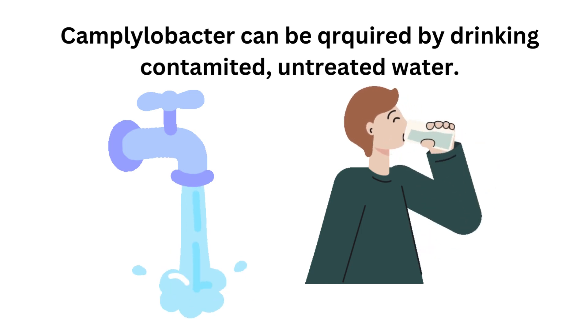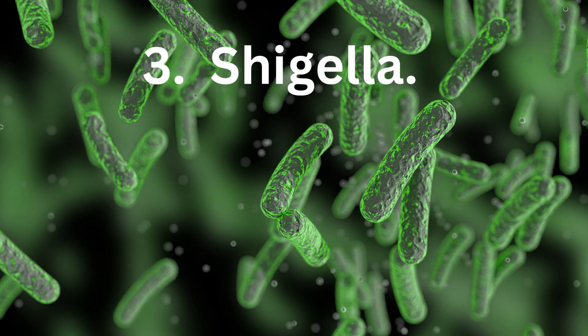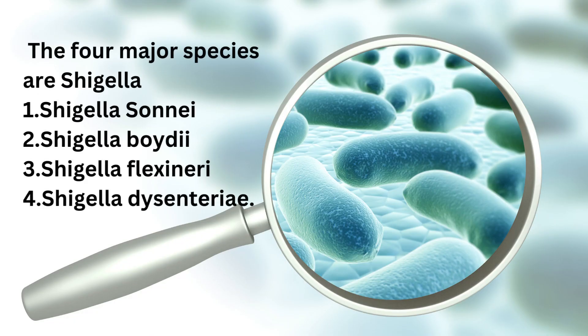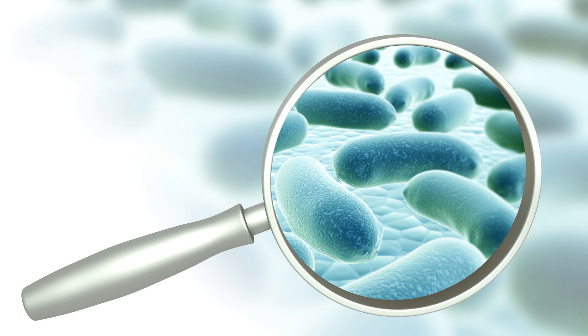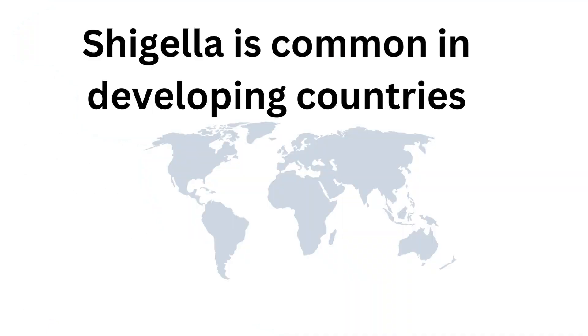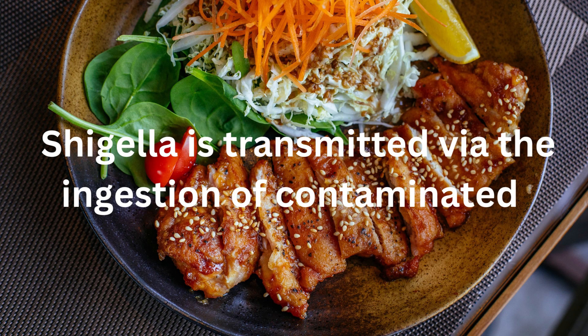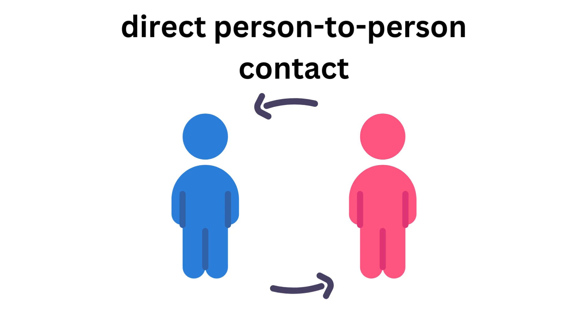Another bacteria known to cause stomach bug is Shigella. Shigella can cause food poisoning resulting in diarrhea and stomach pain. It is a highly virulent pathogen comprised of four significant species with numerous subtypes: Shigella sonnei, the most common in the USA; Shigella boydii; Shigella flexneri; and the lethal one, Shigella dysenteriae. Shigella is common in developing countries and is transmitted via contaminated food, poor sanitation, or direct person-to-person contact.